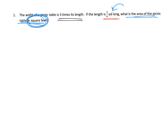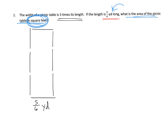First thing we're going to do is draw the picture and represent this. The length is five-sixths of a yard, and the width is three times that length — so basically five-sixths plus five-sixths plus five-sixths. That is what the picnic table is going to look like: five-sixths, and the width is three times five-sixths. So we can see that the width is going to be fifteen-sixths.